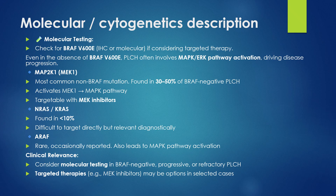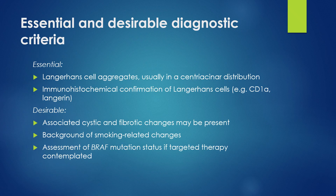Molecular testing is indicated if we are considering targeted therapy, especially in progressive disease. Mutations usually involve the MAPK pathway. The most common is BRAF V600E, which can be detected by IHC as well as molecular testing. The second most common mutation is MAP2K1, which is also a targetable mutation and responds to MEK inhibitors. Other reported mutations include NRAS, KRAS, and ARAF mutations.